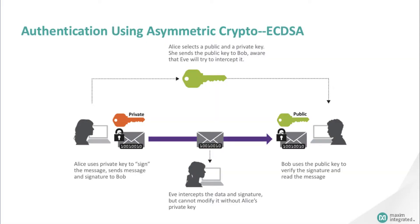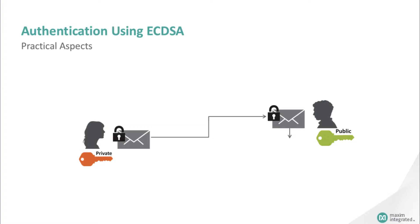This picture illustrates how ECDSA works. Alice generates both public and private keys. She sends the public key to Bob, fully aware that Eve will try to intercept it. When Alice sends a message to Bob, she uses her private key to sign the message, incorporating Bob's public key. Eve can intercept the data but cannot modify it without Alice's private key or read it without Bob's private key. With the ECDSA method, the public key is used for verifying, and the private key is not sent out, so it's not compromised along the way.